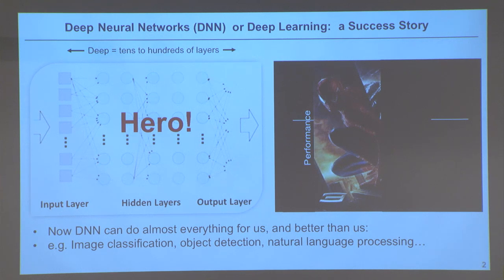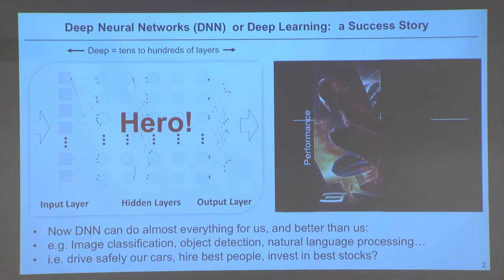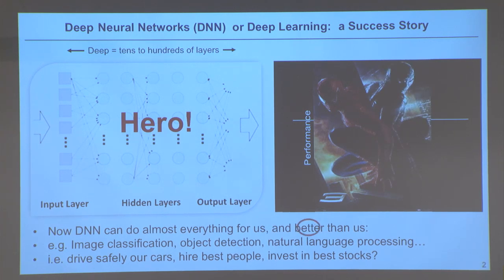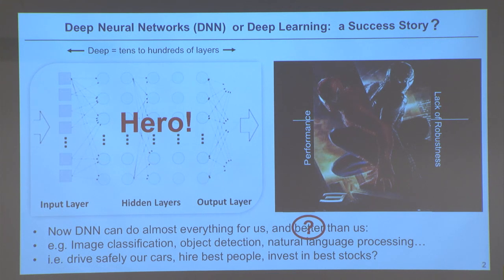The neural network is coming to do everything for us — from image classification to object detection to natural language processing. Most of us are dreaming of having them drive our cars, hire our people, invest in the stock market for us, and so on. But I would like to bring back the question I mentioned before: what does it mean to be better? What I'll discuss highlights a dark side of our hero — or at least raises some important questions.